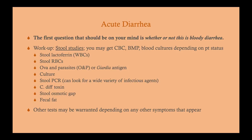Ova and parasites (O&P) looks for parasites and the eggs they leave behind. You can also get a Giardia antigen specifically. You can do culture, but the drawback is it takes a couple of days to come back. A newer tool in our armamentarium is stool PCR, which can look for a wide variety of infectious agents, testing many at once, giving faster results than culture — it's kind of supplanting culture. C. diff toxin is useful, but you don't need it on a patient who hasn't been on antibiotics in the past several weeks.